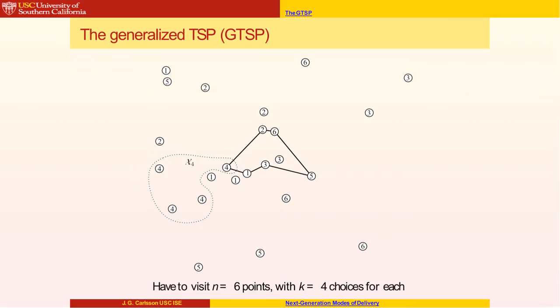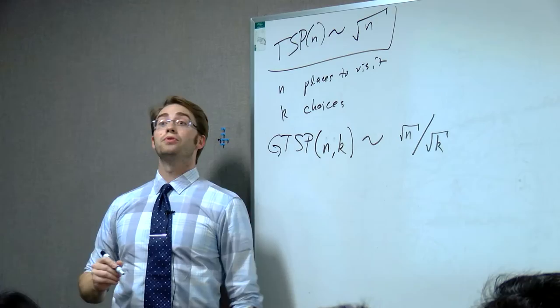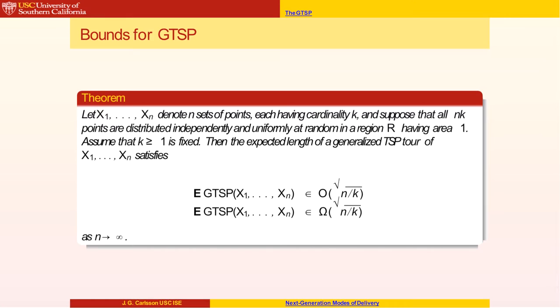I have more choices, I can be more efficient. So it should be decreasing in K, but increasing in N. More errands means more work to do. The generalized traveling salesman tour looks like root N divided by root K. If I have two choices of each item, then the traveling salesman tour decreases by 1 minus 71%.